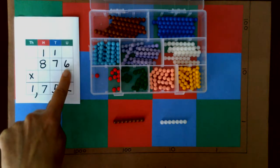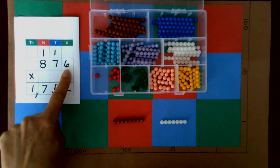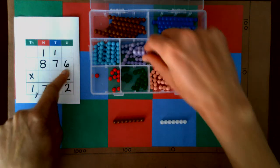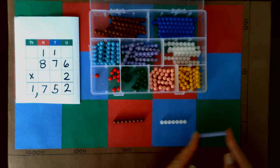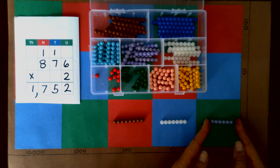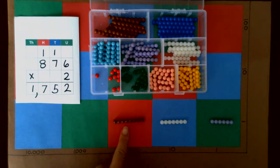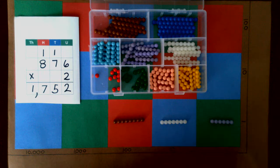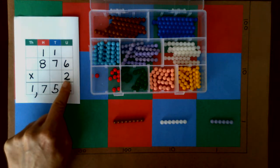Finally we have six units so we're going to take our six bar and put it in the units or the ones place. So we have eight hundred seventy six.